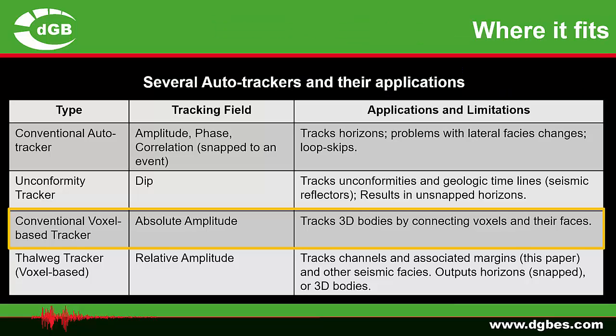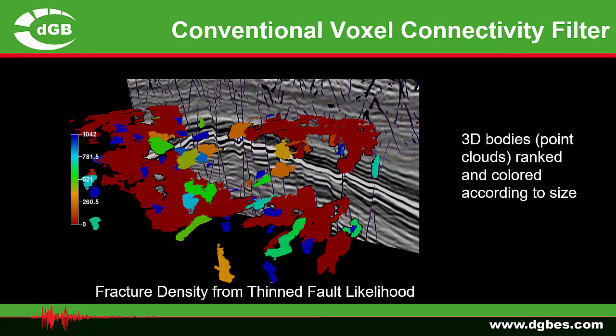The next tracker is a conventional voxel-based tracker. These trackers track on absolute amplitude and result in 3D bodies or point clouds by connecting voxels and their faces. In this example, the fault image is calculated with thin fault likelihood — a new fault imaging attribute developed by Dave Hale of the Colorado School of Mines — used as input to calculate fracture density. These fracture density volumes are then combined into bodies using a voxel connectivity filter, giving blobs ranked by size to identify sweet spots with the most fractures.